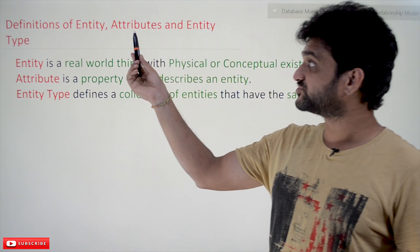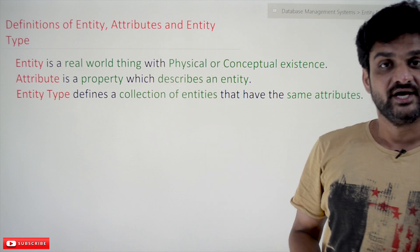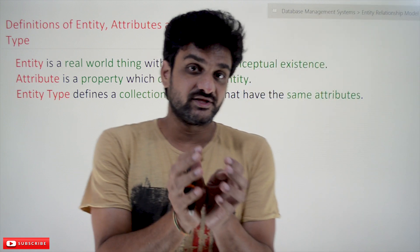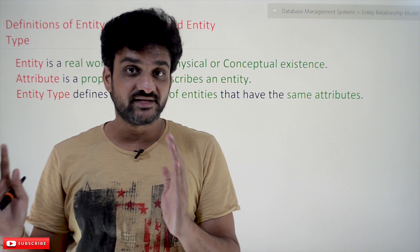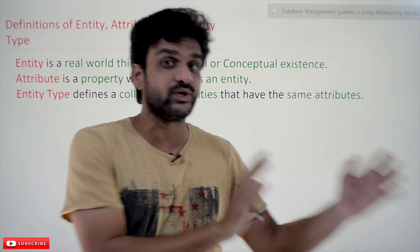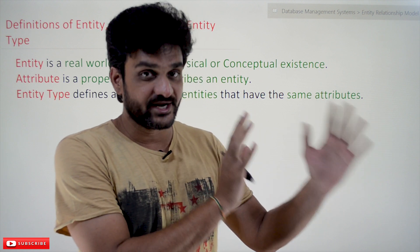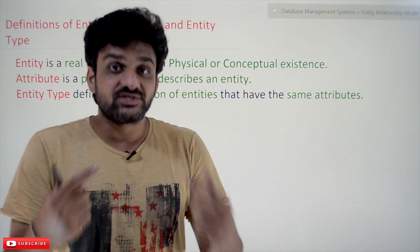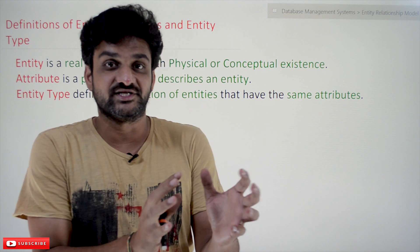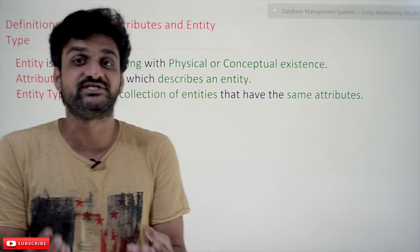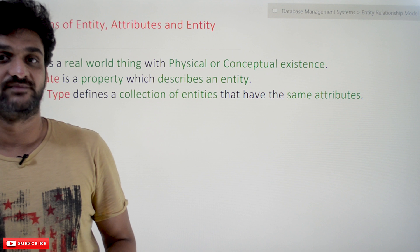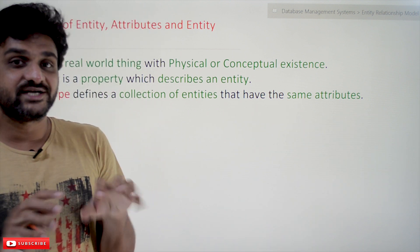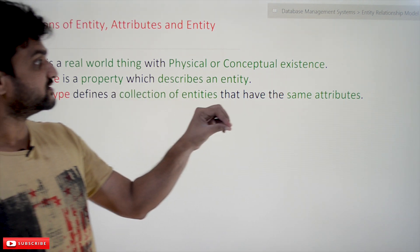Hi, welcome to Learning Monkey. I am Vikram. In this class we'll try to understand the definitions of entity, attributes, and entity type. In our previous class we discussed about the entity relationship model and database design, where we saw that requirements collected will get converted into an ER model. In the process of conversion we need to understand certain definitions, so let's try to understand some definitions related to those concepts.